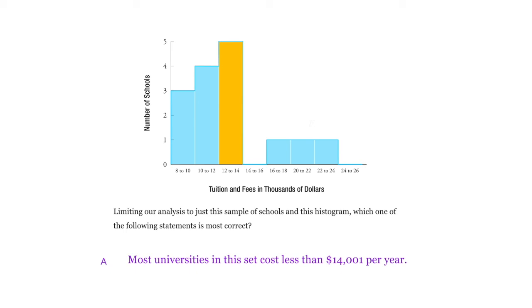You see there's five that are in this category and four that are in this category and three that are in this category. And there's only one in each of these three categories. So most of the schools cost less than $14,001 per year.